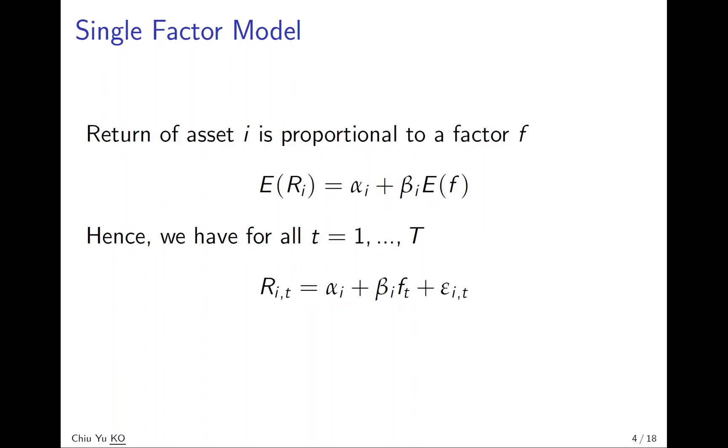So each stock has its own beta, called beta i for stock i, and they also differ in its constant term alpha i. If you don't use expected return, then the formula will be Rit, the stock of i at time t, equal to a constant alpha i. Note that the constant alpha i doesn't have the subscript t, so it's constant over time.